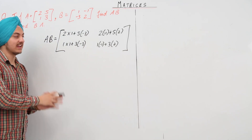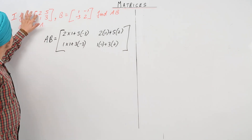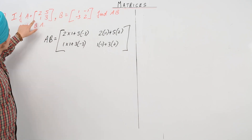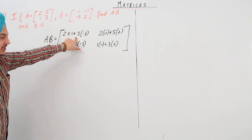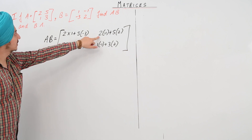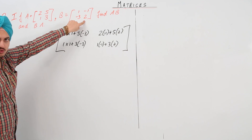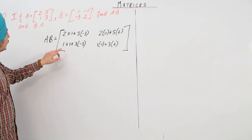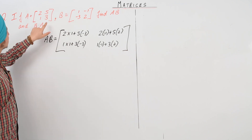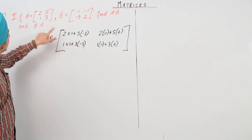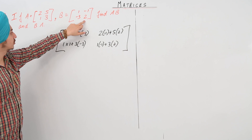Let's recheck. For the first term AB(1,1) we have 2 into 1 plus 5 into minus 3. For the second term AB(1,2) we have 2 into minus 1 plus 5 into 2. For AB(2,1) we have 1 into 1 plus 3 into minus 3, and for AB(2,2) we have 1 into minus 1 plus 3 into 2.